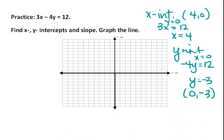If we plot these points, letting each line on the grid be 1, here is our x intercept at 4, 0, and our y intercept at 0, minus 3.